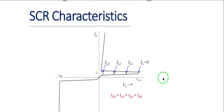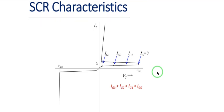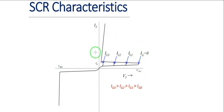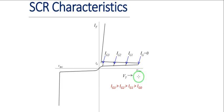Now, the SCR characteristics graph summarizes what we have discussed. If you are faced with a graph, it is just a summary of how a certain component behaves. We are looking at the SCR voltage-current characteristics. The X-axis is terminal voltage and the Y-axis is terminal current. VBO is the positive breakover voltage, negative VBO is on the other side. IH is holding current and IG is gate current.